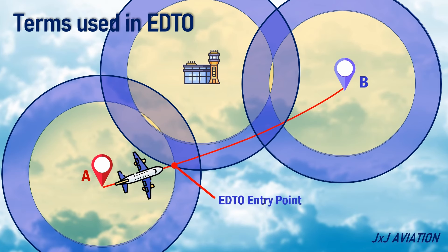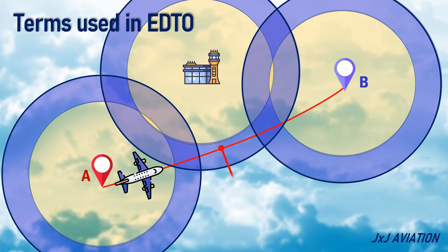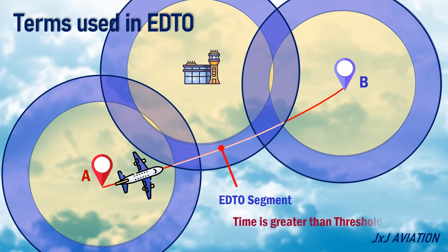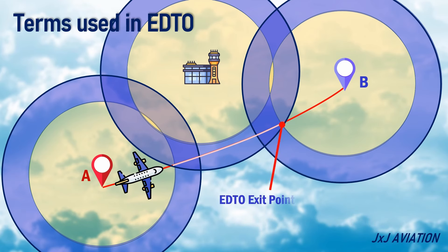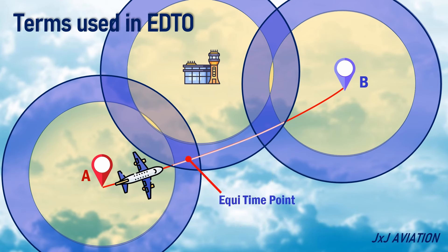EDTO entry point: This is the point where an aircraft exits the threshold time circle and enters the EDTO segment. EDTO segment: The section of the flight route where the time to an en-route alternate will be greater than the threshold time. EDTO exit point: The point where an aircraft enters the threshold time of an airport or exits the EDTO segment. Equal time point: A point on the EDTO segment where the time taken to fly to the en-route alternates is the same.